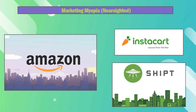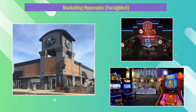However, with Amazon being such a large and successful company, it didn't really have a problem with widening its focus to combat these newly emerging delivery services. Then, moving down to marketing hyperopia.